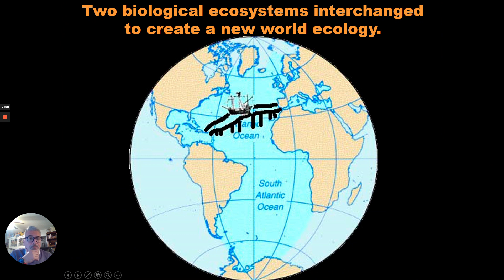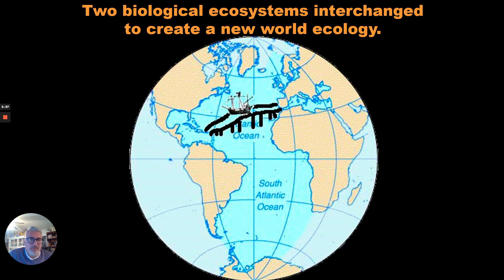Two biological ecosystems merged to create a new world ecology. When Christopher Columbus brought these two hemispheres — two sides of the world together — by crossing the Atlantic in 1492, he brought those ecosystems together. In the years to come, they were going to interchange elements, and this exchange of elements was going to have very deep consequences for humans, plants, animals — pretty much the whole world felt that.